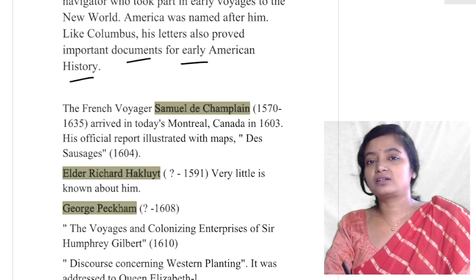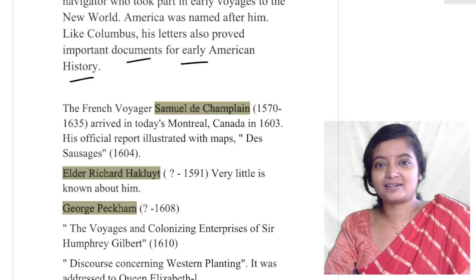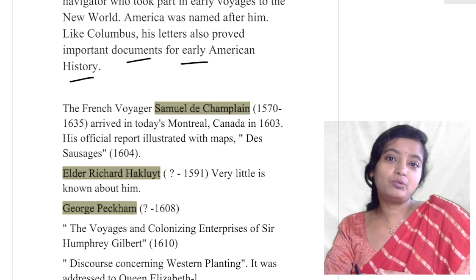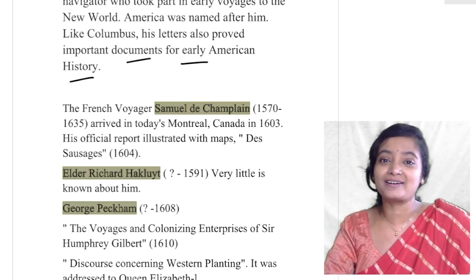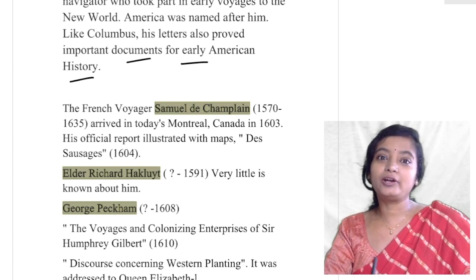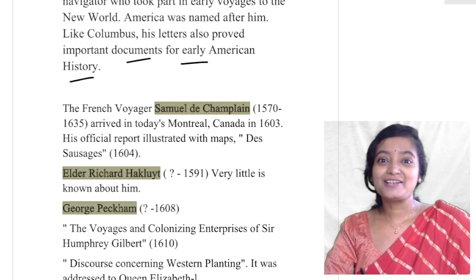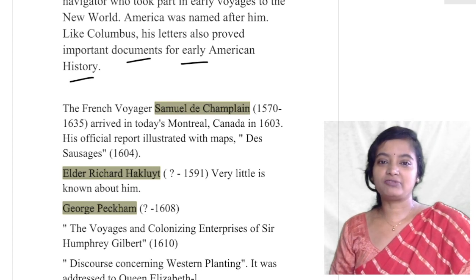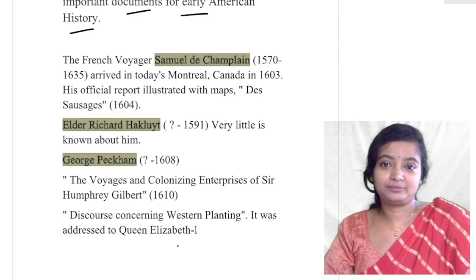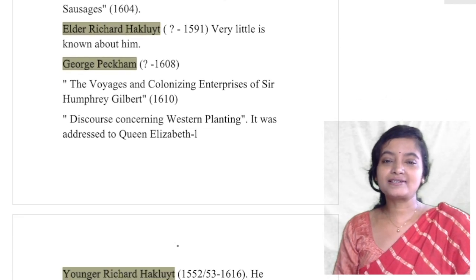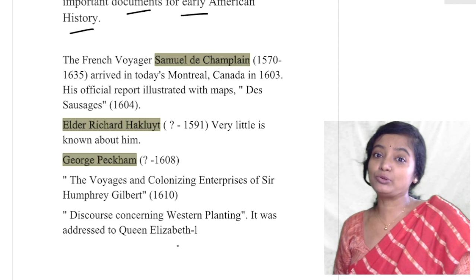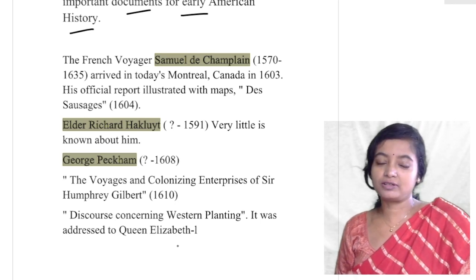Vespucci's letters also proved to be important documents for early American history. These letters helped people waiting for explorers to return and tell about their experiences — similar to how people today would wait for astronauts returning from the moon or Mars. The French voyager Samuel de Champlain arrived in today's Montreal, Canada, and his official report was illustrated with maps.